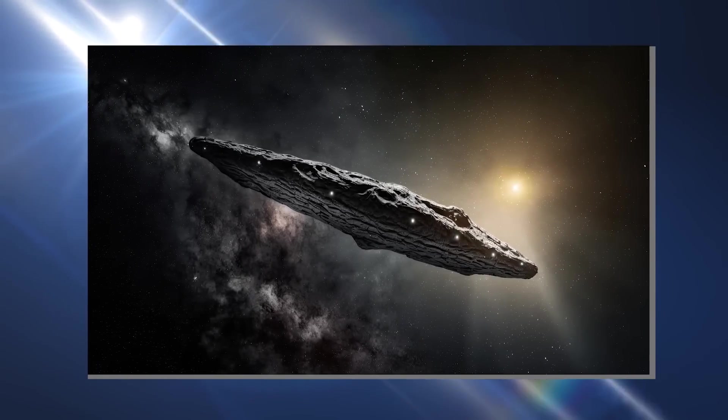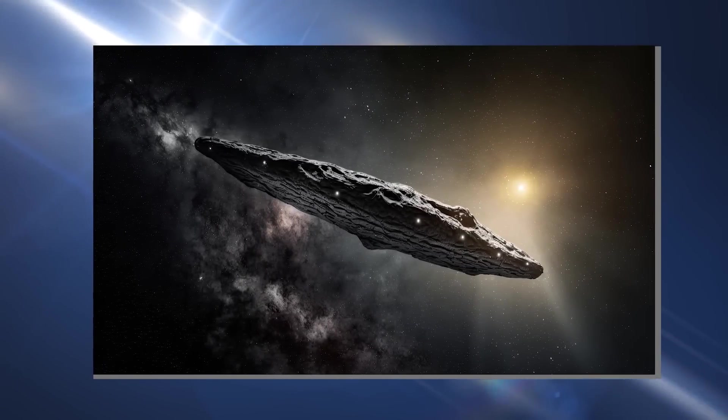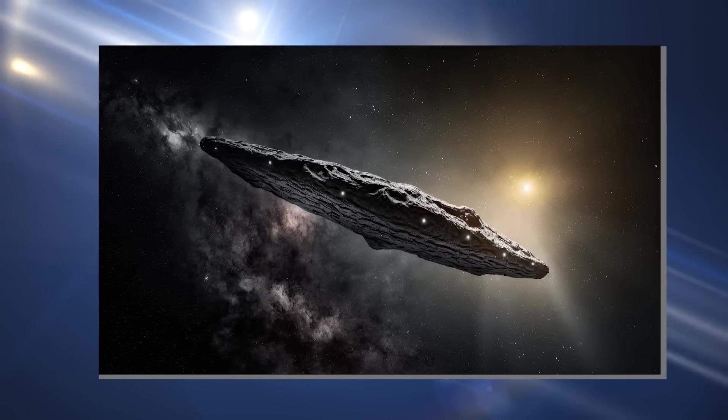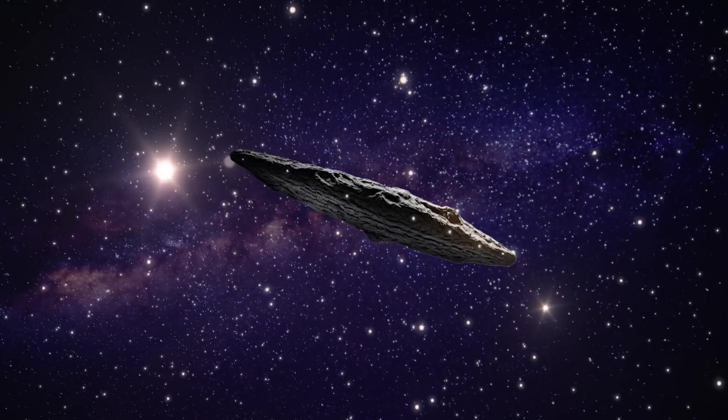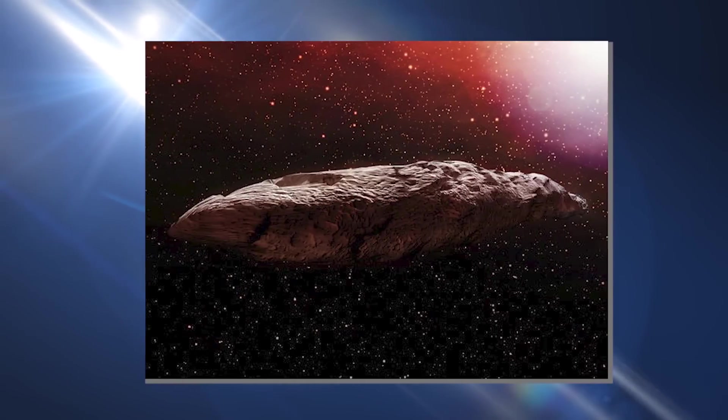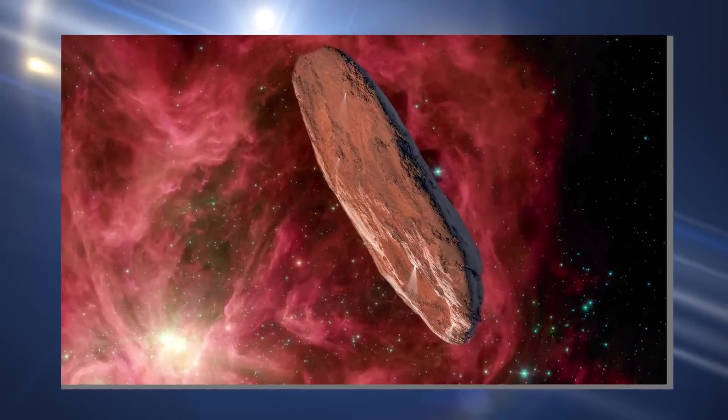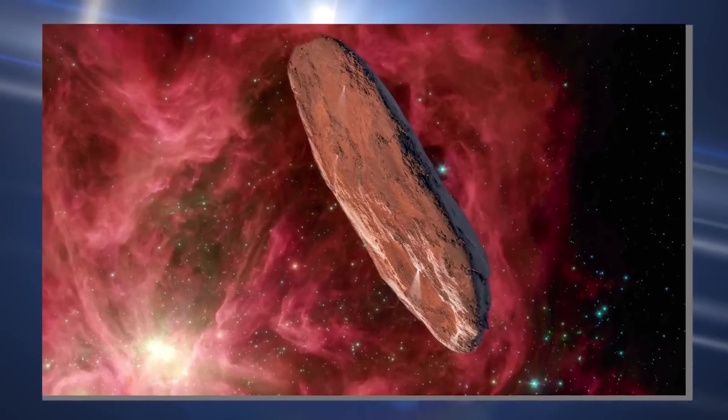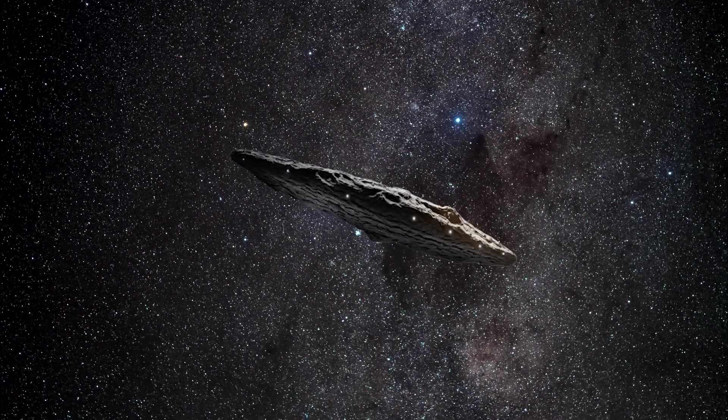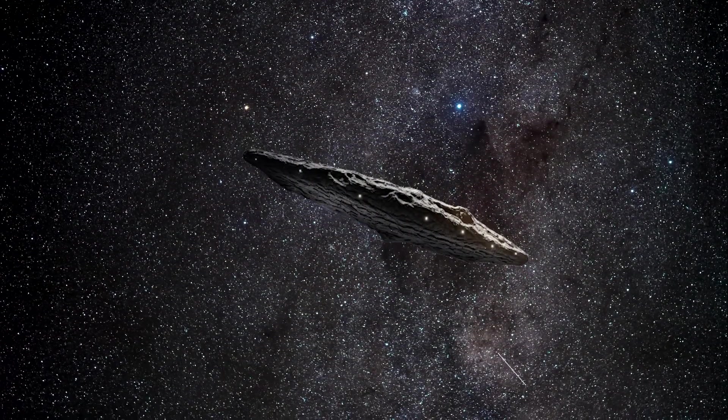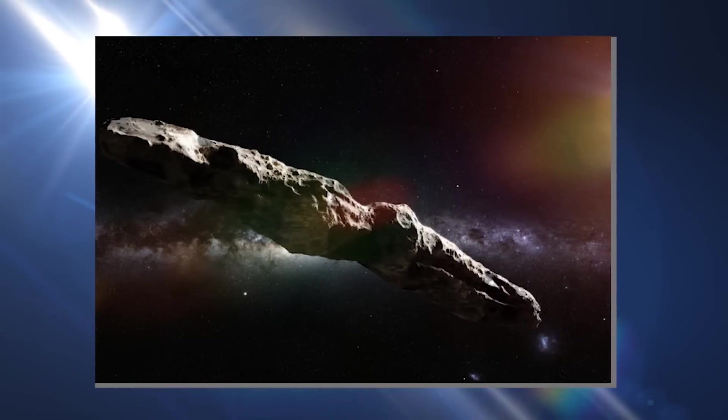Most interestingly, Oumuamua is said to have a single-like shape and a reddish tint, making it a complete space cigar indeed. There are a few theories why Oumuamua might have a red tint. One possibility is that it is made of a carbonaceous material, such as a comet nucleus. Another possibility is that Oumuamua is covered in organic molecules, which can also have a red tint.